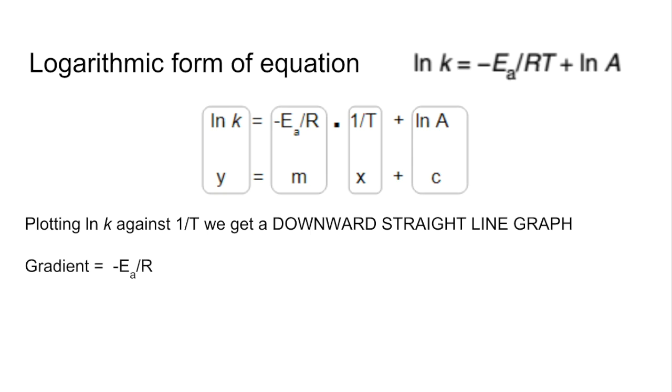So the gradient's going to be equivalent to minus Ea over R, and the Y-intercept is the ln, or the natural log of A.